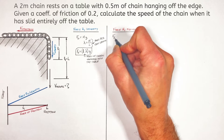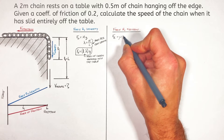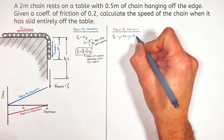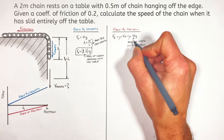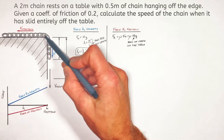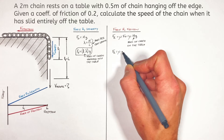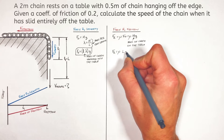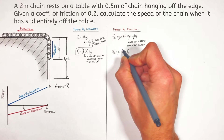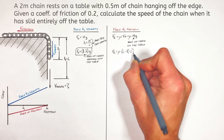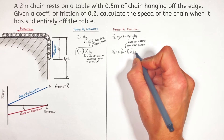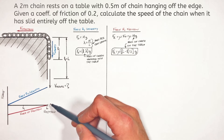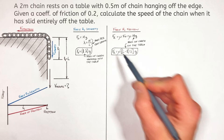Moving on to the force of friction: friction is given by mu times Fn, the normal force between the chain and the table, which equals the mass of chain sitting on the table times g. The length of chain on the table is the total length L minus little l (the hanging length), so the mass on the table is (L − l) times lambda. Multiplying by g gives the total friction force: mu times lambda times (L − l) times g. As l gets larger, the friction force decreases, which matches the graph.